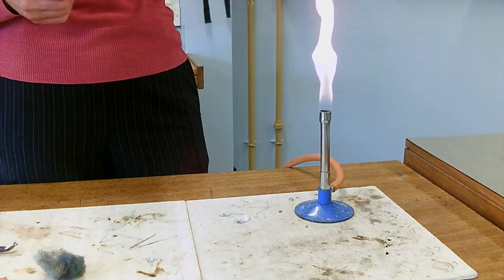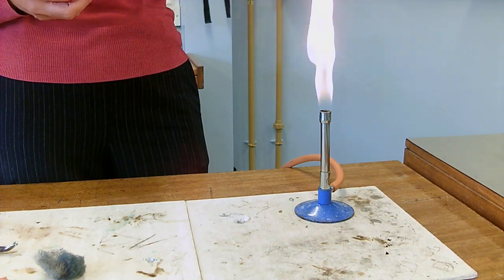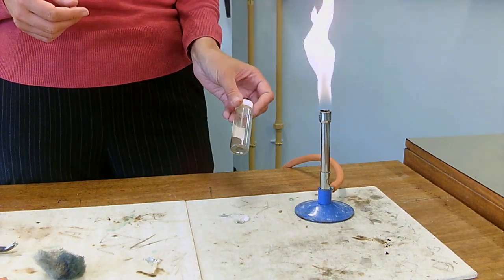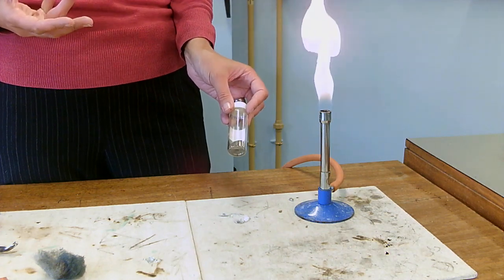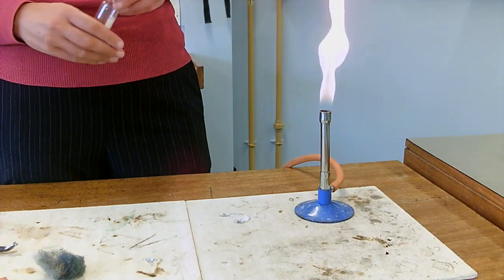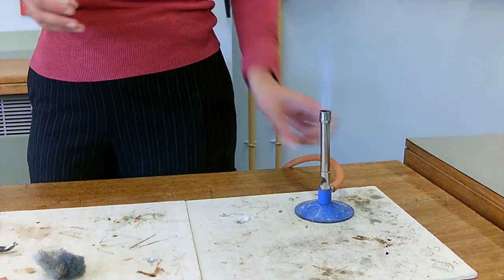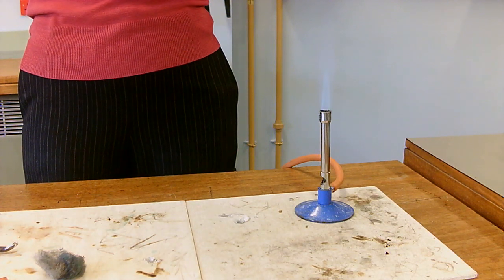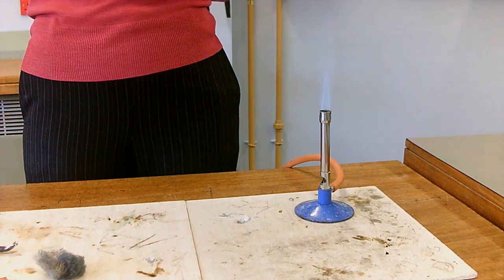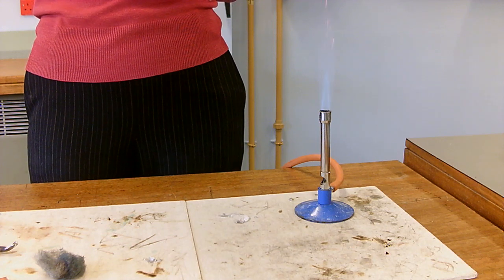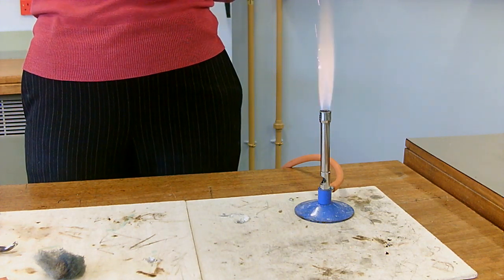Iron is used in sparklers and fireworks. And if we increase the surface area of things, we make reactions happen faster. So, what we've got here is some iron filings, which is ground up iron into almost a little powder.